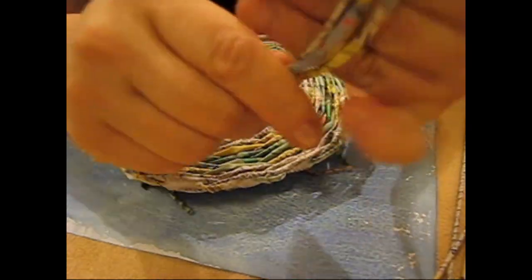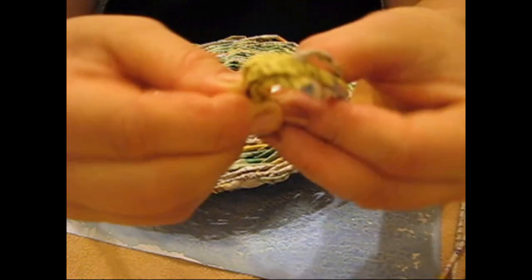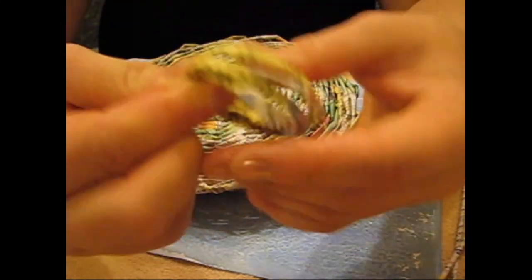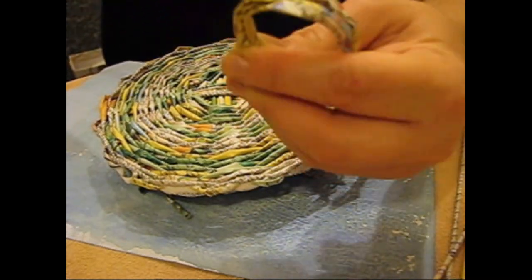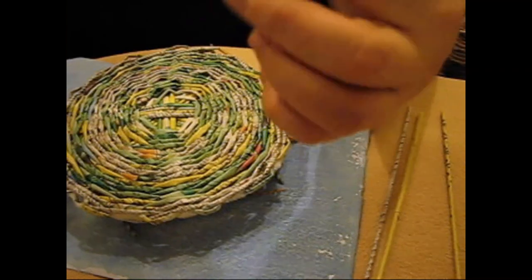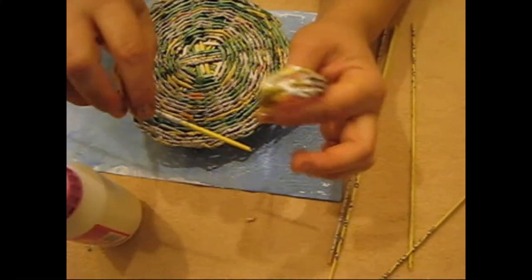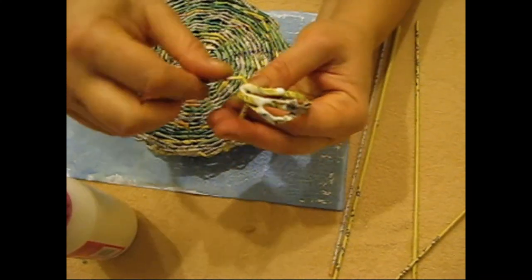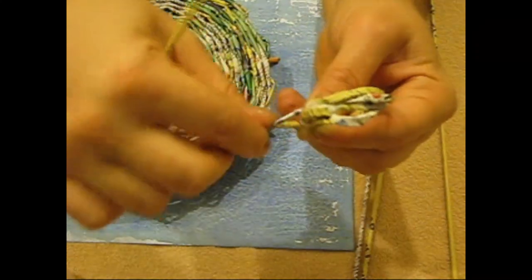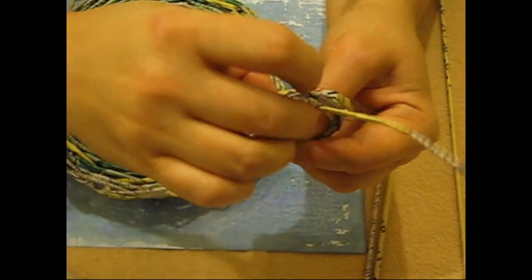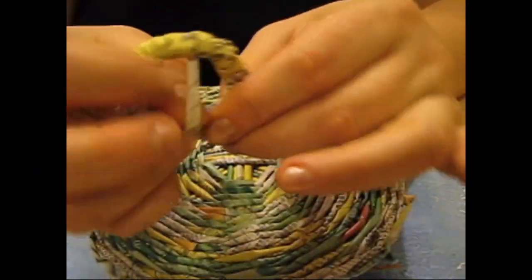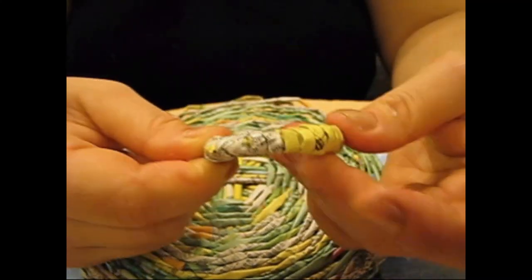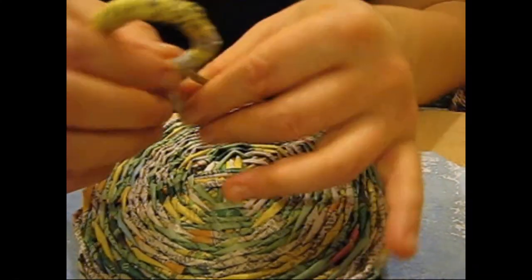The only thing left is to make a knob for the lid. It will be round shaped. Take two thin tubes. Wind onto two or three fingers. Three fingers are more convenient. So, we've got such a circle. We can tie it with a thread or can start braiding right away. I leave a tip for tucking into the lid. Winding it round. So, we've finished winding the last ring.